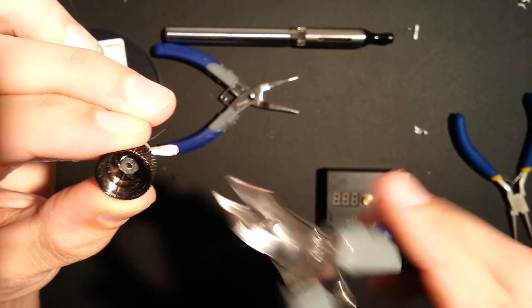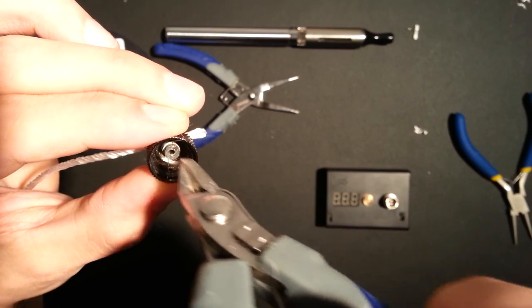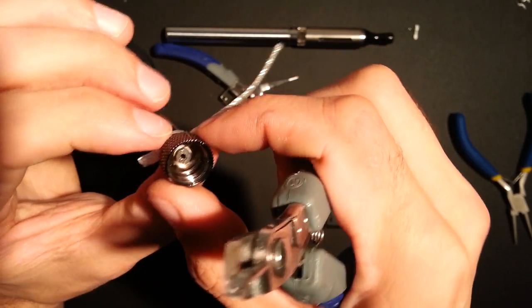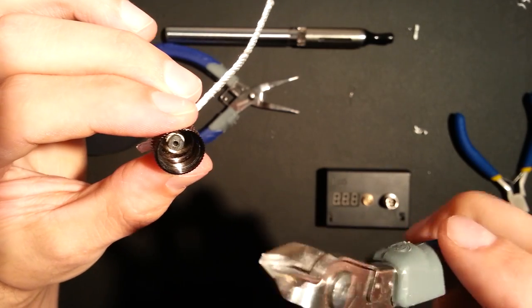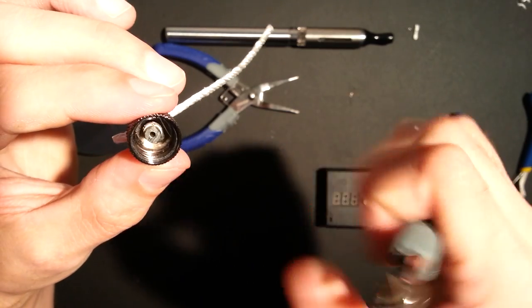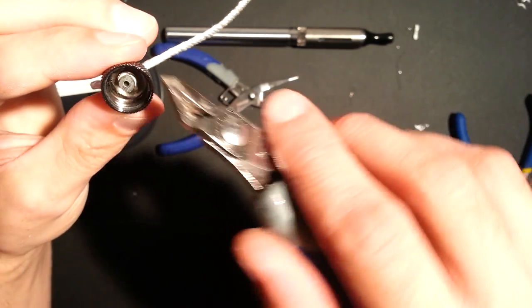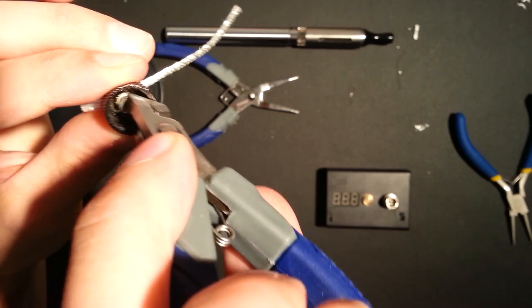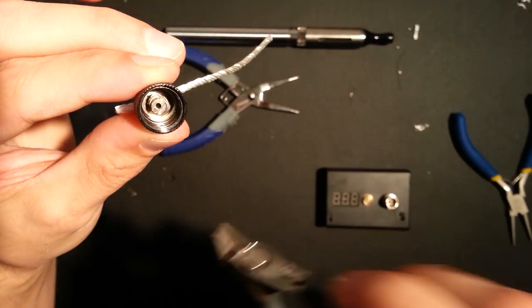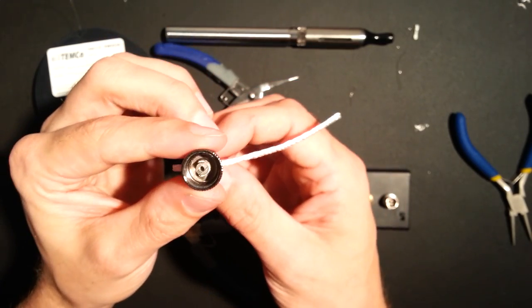Next thing we want to do is trim out the excess coil. You want to get as close to that center pin as possible. If you leave too much, it's going to short the coil. So there, we've just snipped away the excess. It looks pretty darn good, if you ask me. That looks pretty lovely.